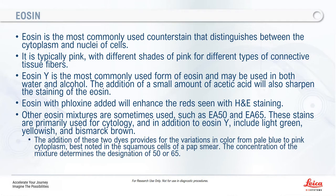Eosin is the most commonly used counterstain — it distinguishes connective tissue and cytoplasm from nuclei. It's generally pink, with different shades depending on the tissue fiber being stained. Eosin Y is the most common form and can be made with either water or alcohol as a base. Adding a small amount of acetic acid will sharpen the eosin detail, which is especially helpful if your eosin is weak.